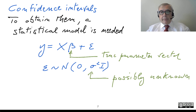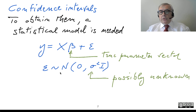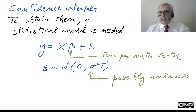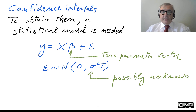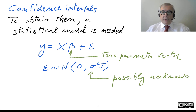So the error committed when observing Yi is independent of the error when observing Yj. We could also make weaker assumptions — for instance, just assuming epsilon has zero expectation and variance sigma-square times identity without specifying its distribution. But since we are interested in confidence intervals, we need information about the distribution, so we go directly for the stronger assumption.